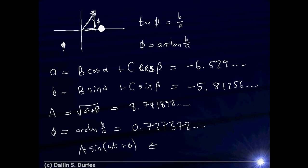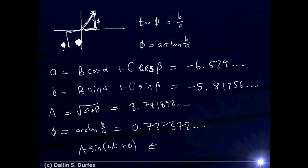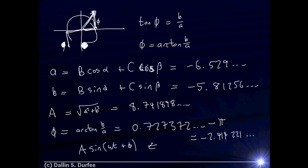The problem is that tangent is multi-valued. If you take the tangent of b/a and also of (-b)/(-a), you get the same result. So the calculator doesn't know which quadrant to give you — you have to figure it out yourself. Once you get the inverse tangent, check whether it gave you the correct quadrant. If not, add or subtract pi to get to the correct quadrant. Subtracting pi gives the correct phase angle: negative 2.414221... It doesn't matter whether you add or subtract pi — going positive one way is the same as going negative the other way.